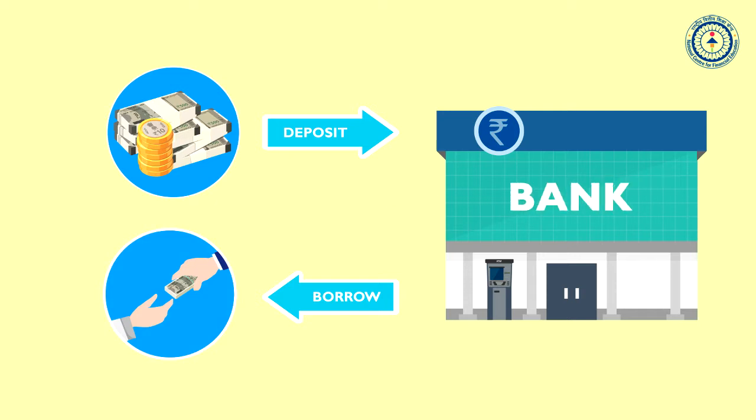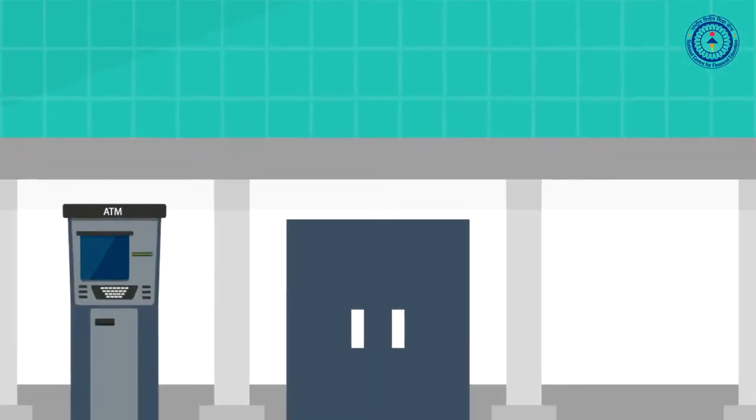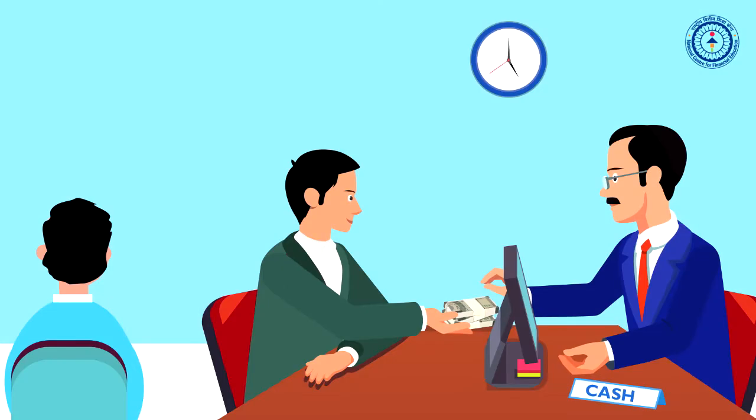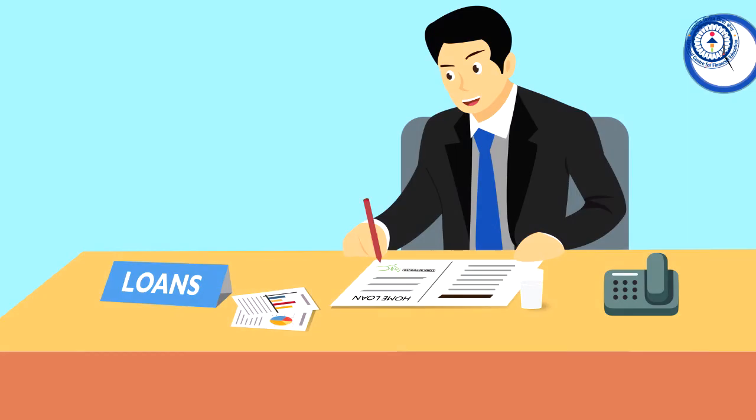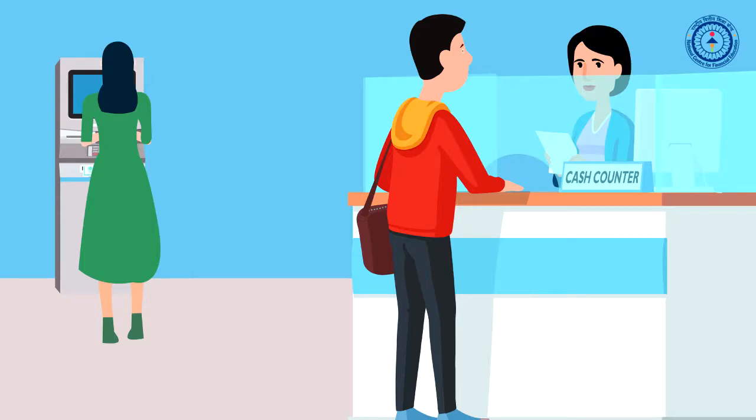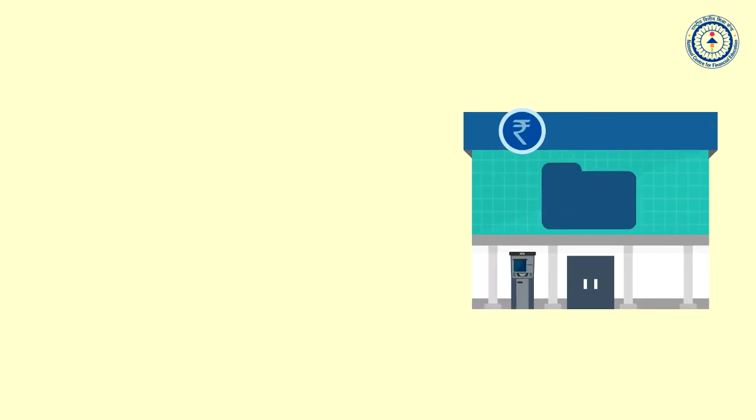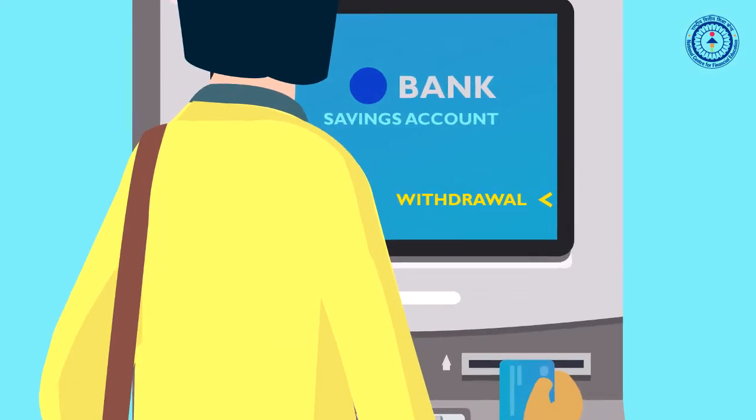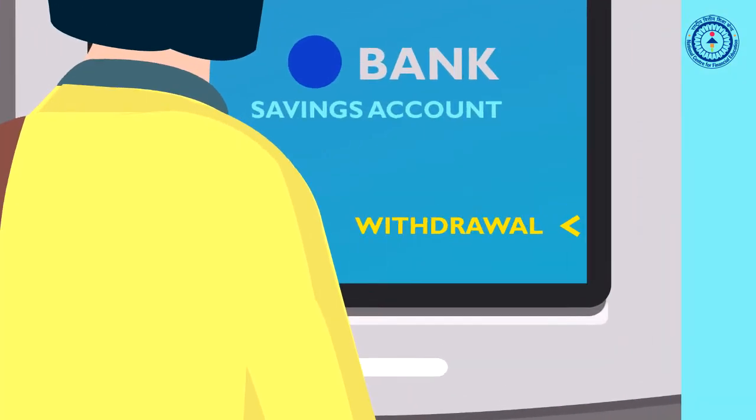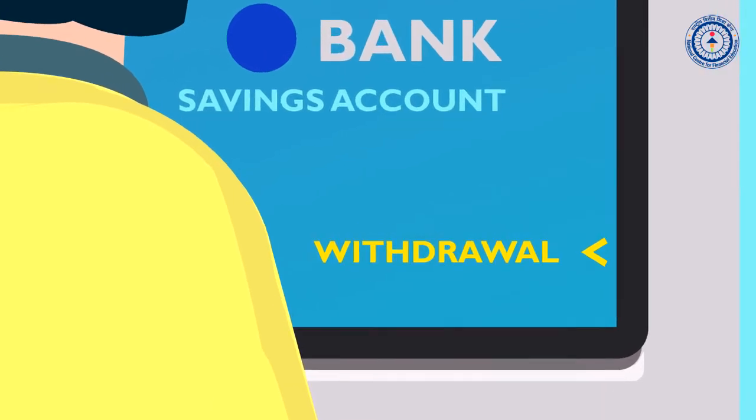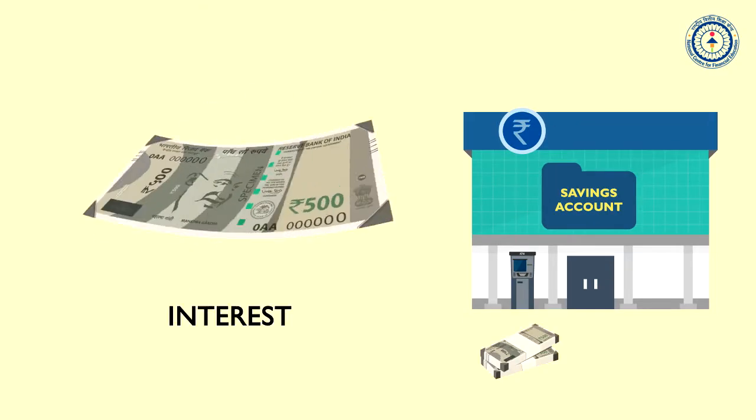Banks perform various functions like taking deposits, giving loans, transferring or receiving money, offering credit cards, debit cards, etc. The account in which an individual's money is kept is called a savings account. The savings account holder can withdraw the money from his account as and when required. An interest is paid on the savings in the account.